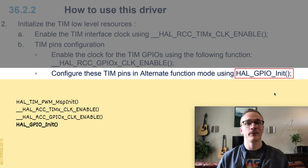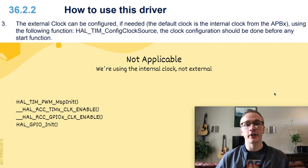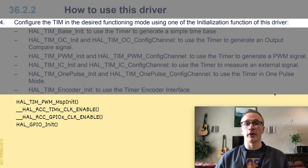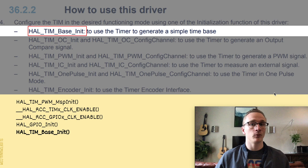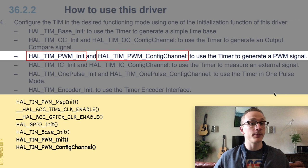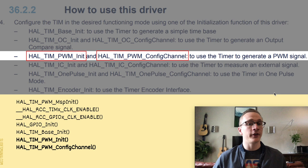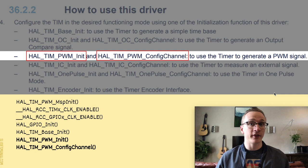Step three tells us how to use an external clock if needed — we're just going to be using the internal clock, so we can skip this step. Step four tells us to configure the timer in the desired functioning mode using the initialization functions listed. Up first we have HAL_TIM_Base_Init, which generates a simple time base — we'll add that to our list. The next bullet point applicable to us talks about PWM — they list HAL_TIM_PWM_Init and HAL_TIM_PWM_ConfigChannel, specifically for generating a PWM signal.